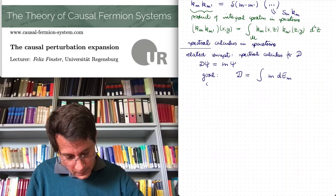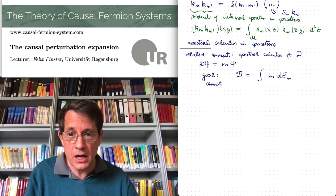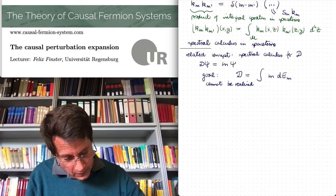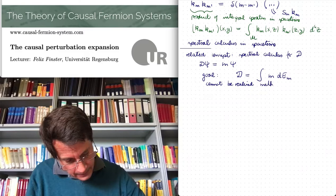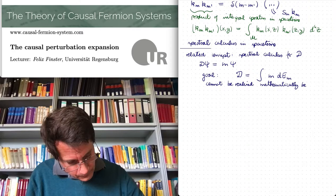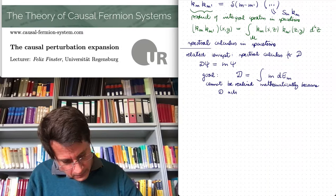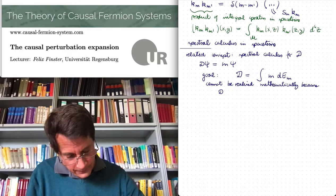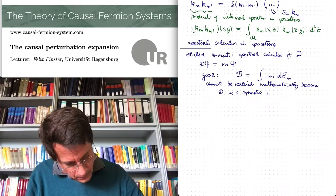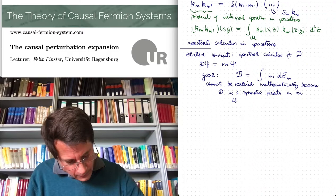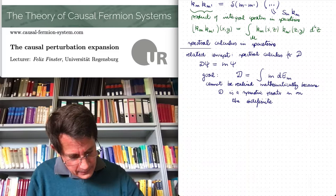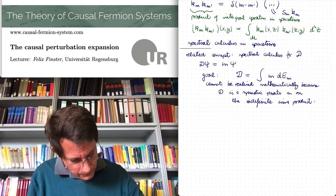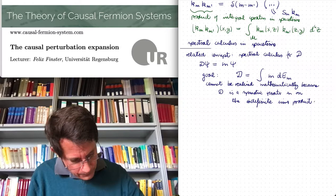Therefore, this spectral decomposition cannot be realized with mathematical rigor, because D acts on an indefinite inner product space — it is a symmetric operator on a Krein space with the spacetime inner product. Let me instead illustrate this spectral calculus in spacetime by considering the vacuum Dirac equation, and do some explicit computations.